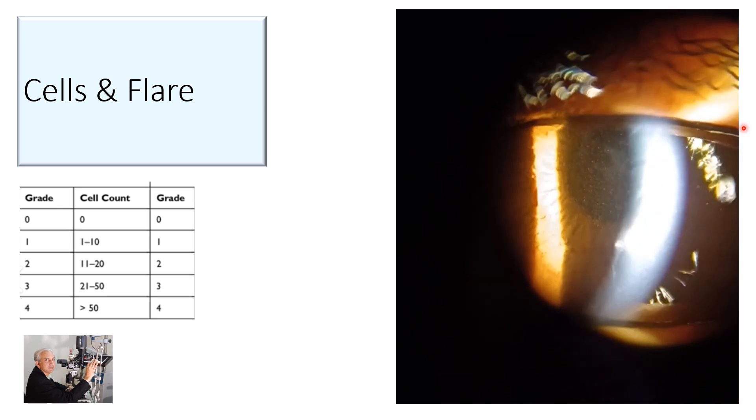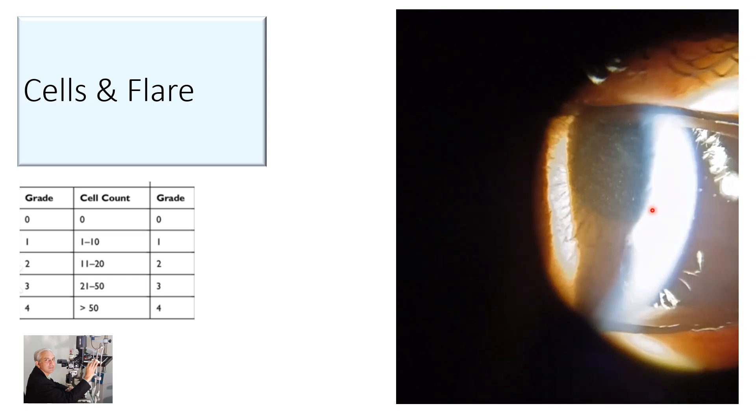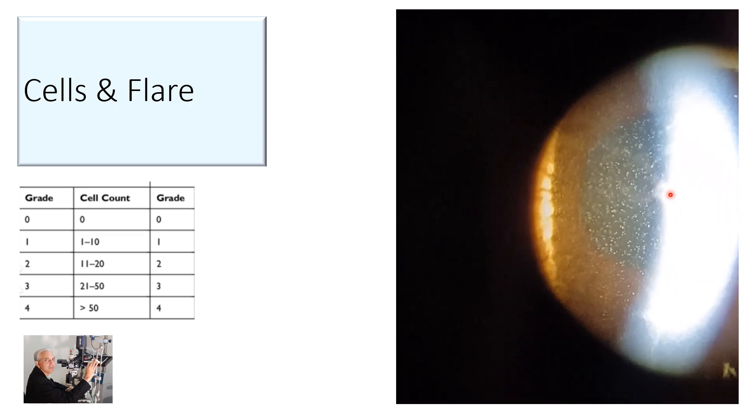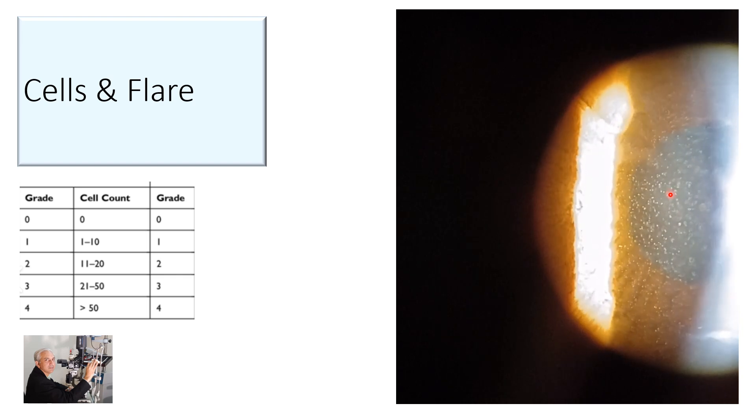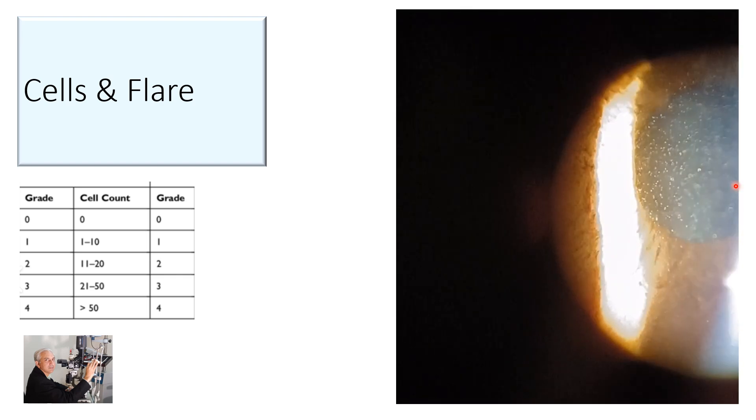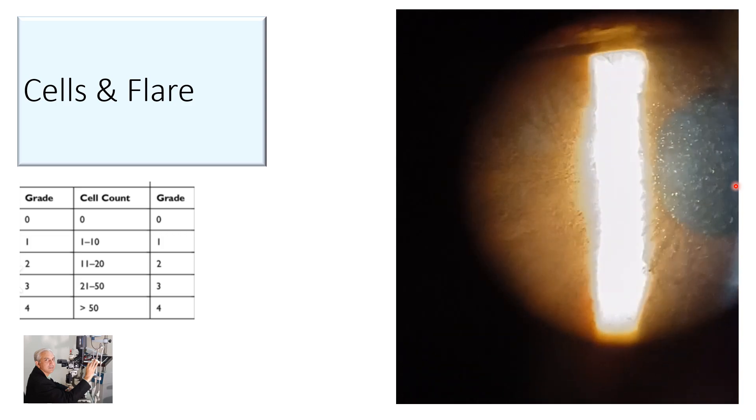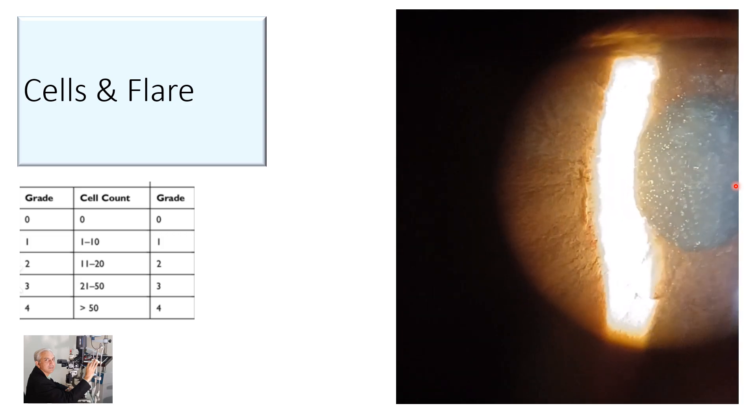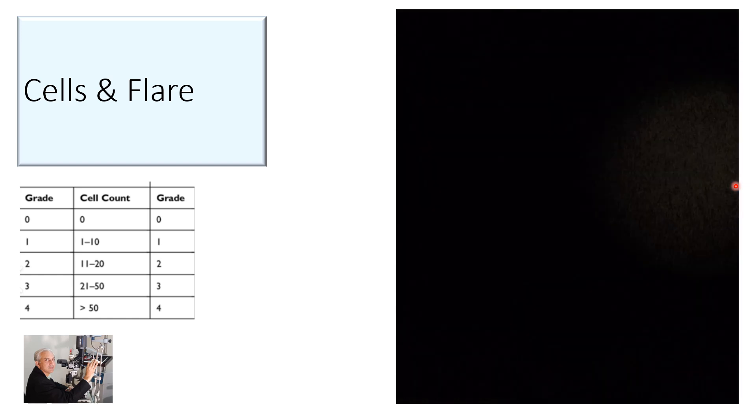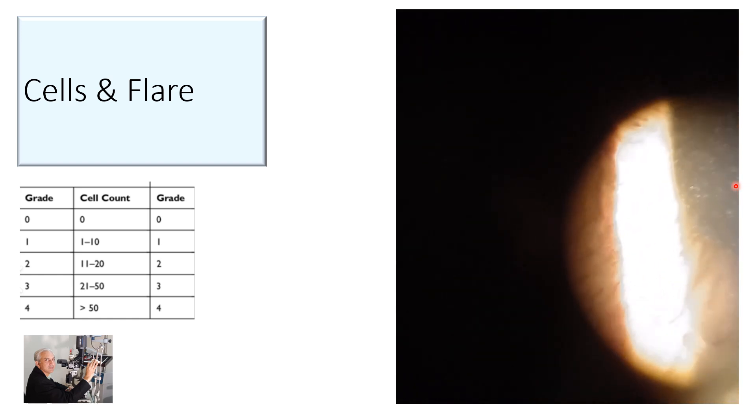These small particles of cells you see floating over here are cells which are in the anterior chamber and they are scattering the light. If we make the light smaller in size then we'll be able to see that flare, the streak of light which goes from the cornea to the anterior chamber.